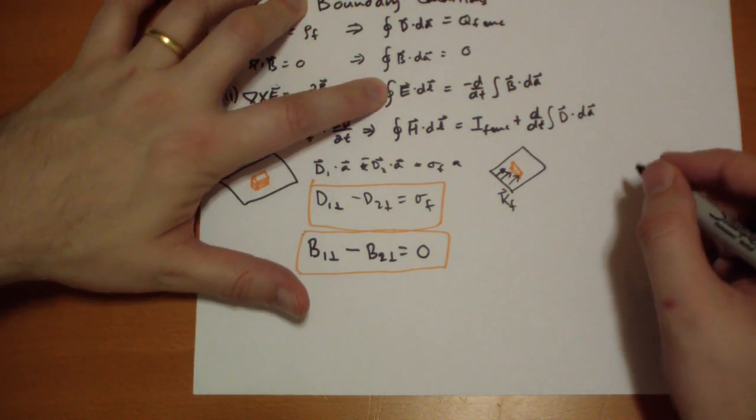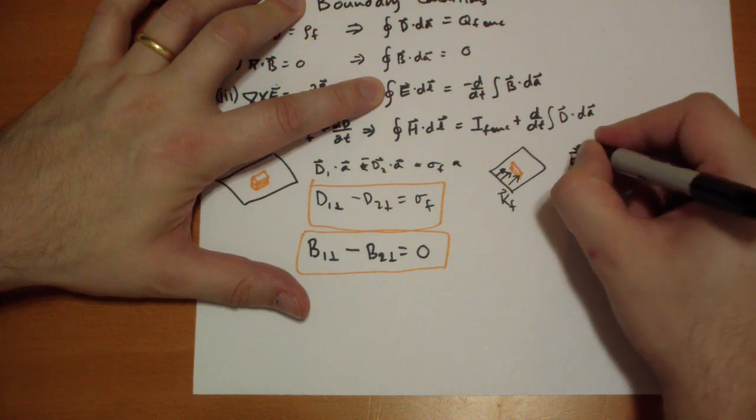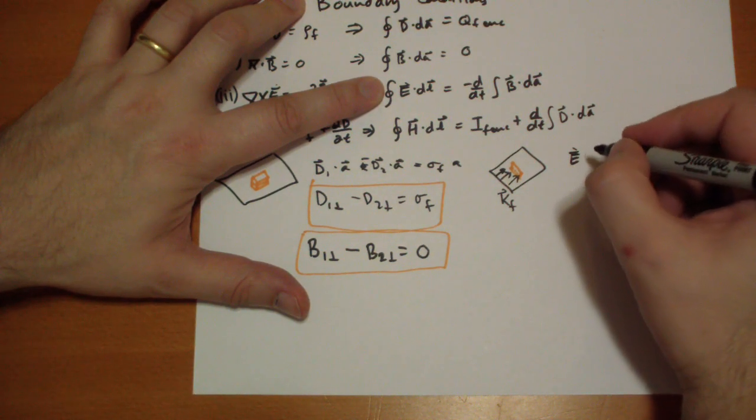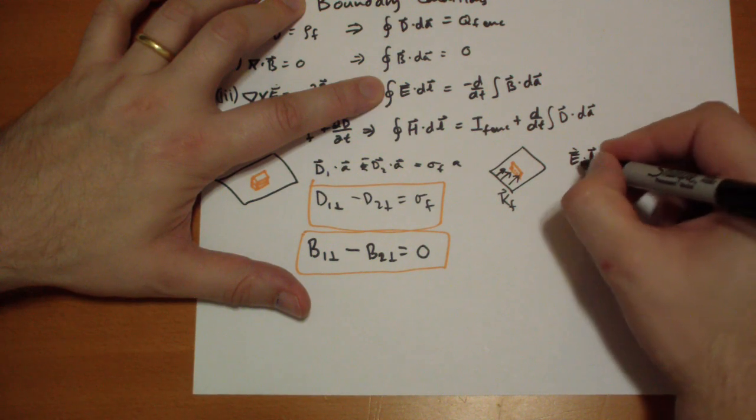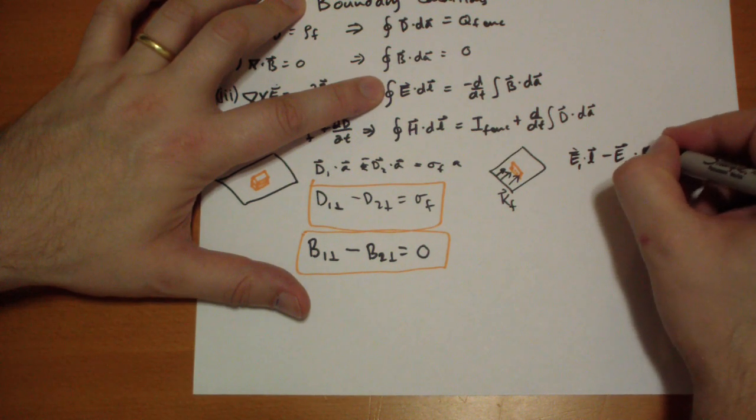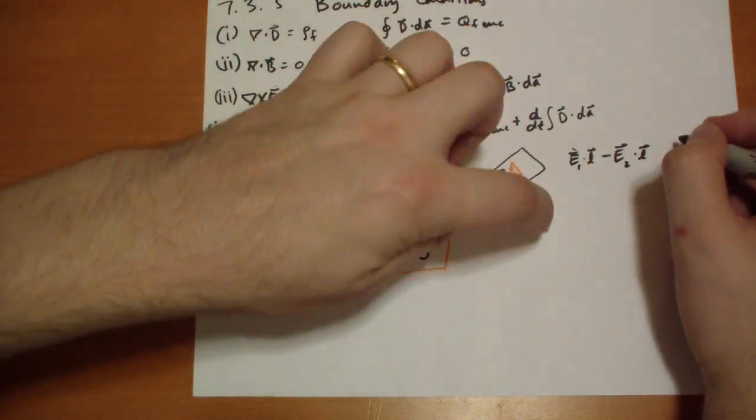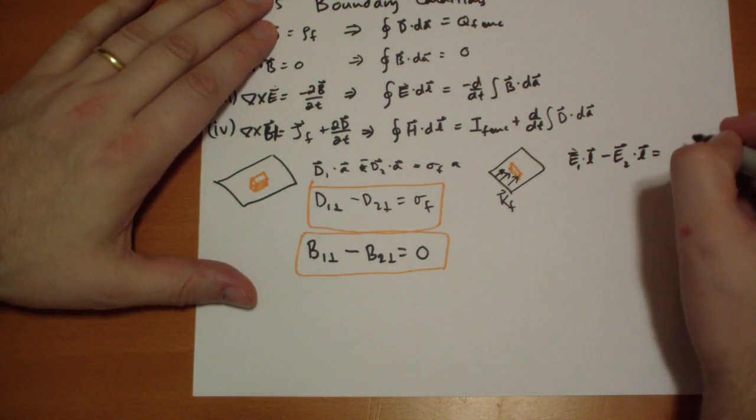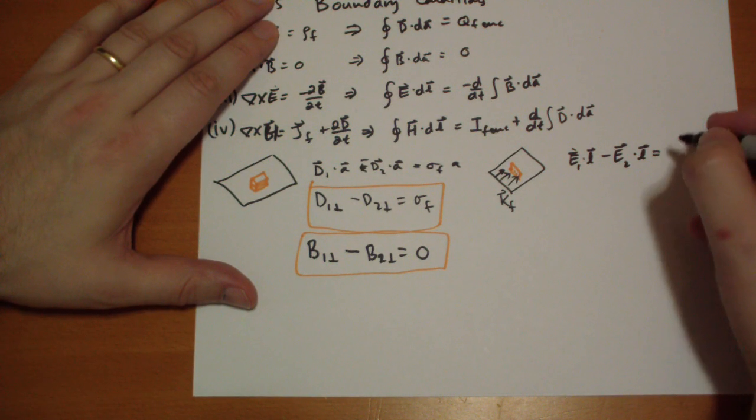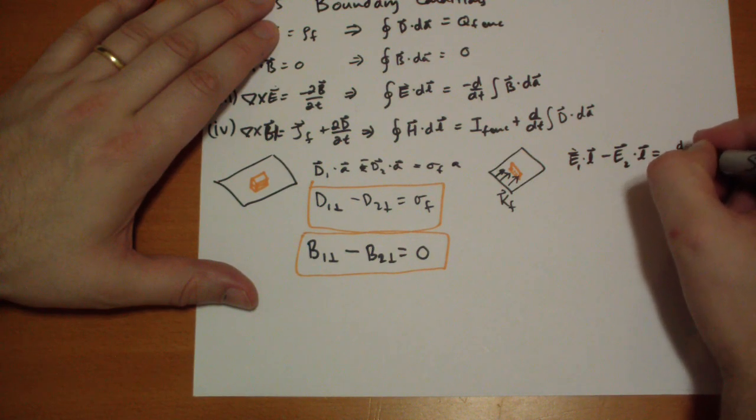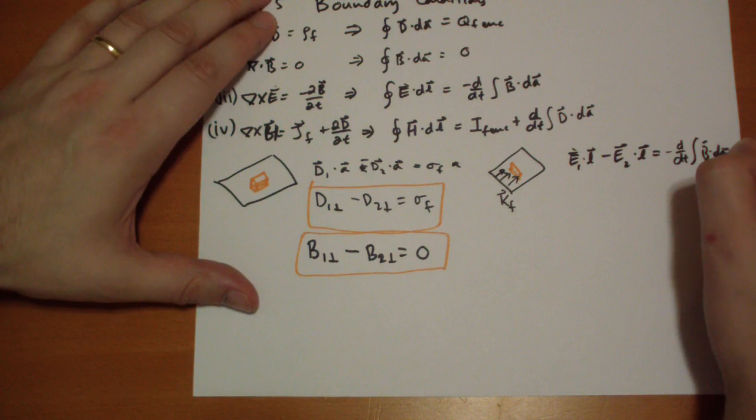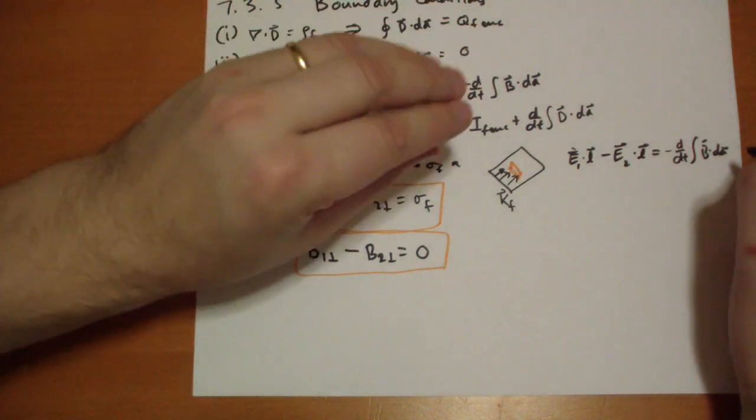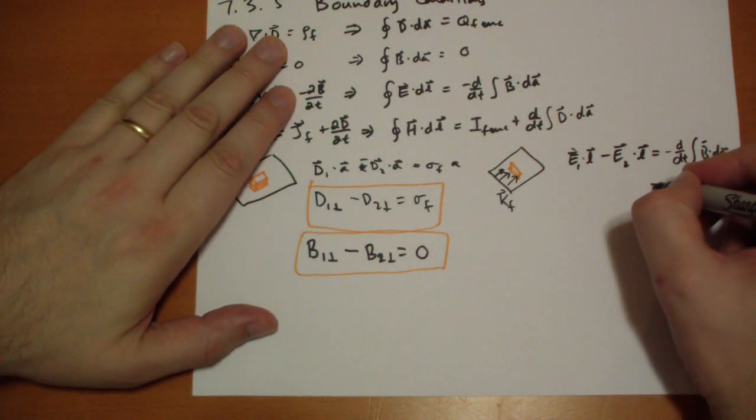We get E vector on top dot L vector minus E vector on bottom dot L vector equals the change in magnetic flux. But what's the area? The area is approaching zero because the height is approaching zero, so this has to equal zero.